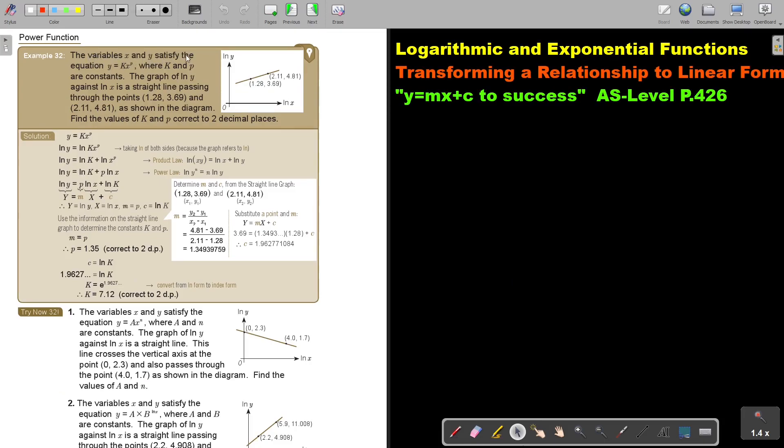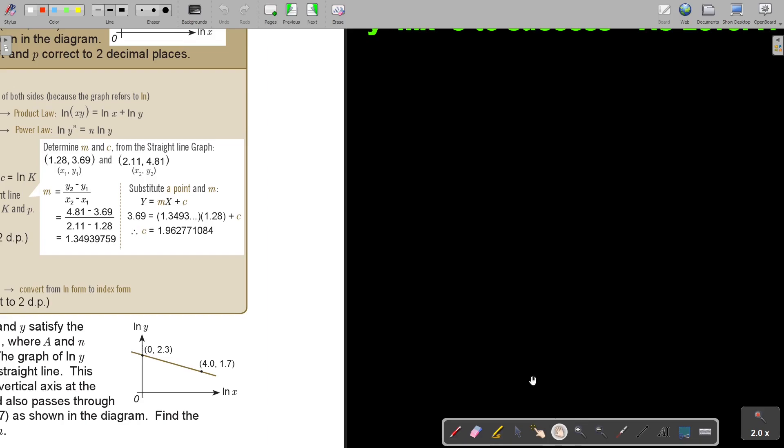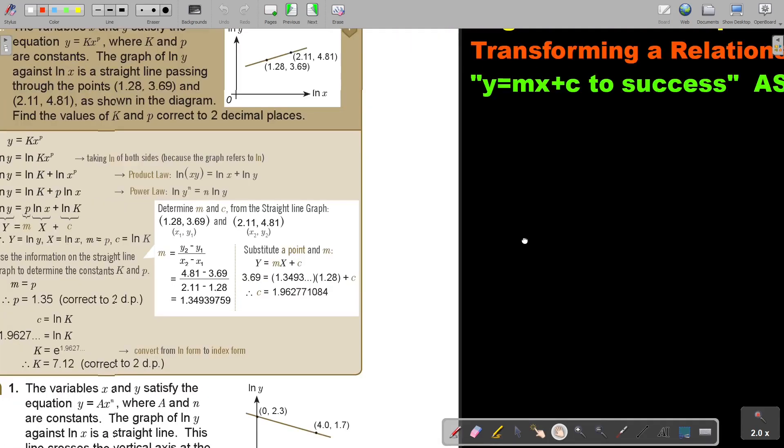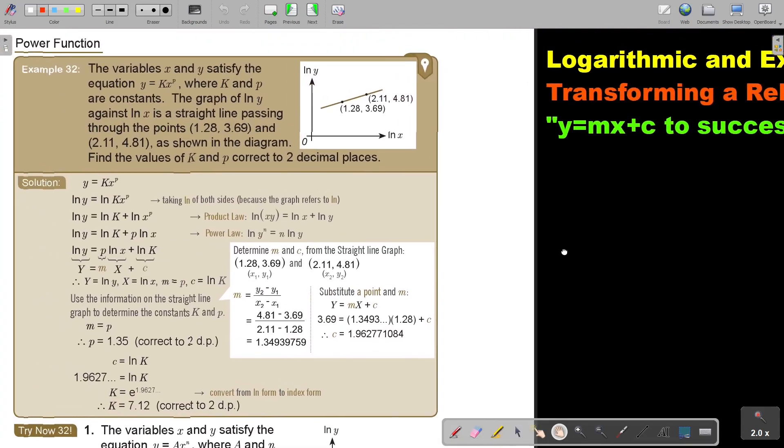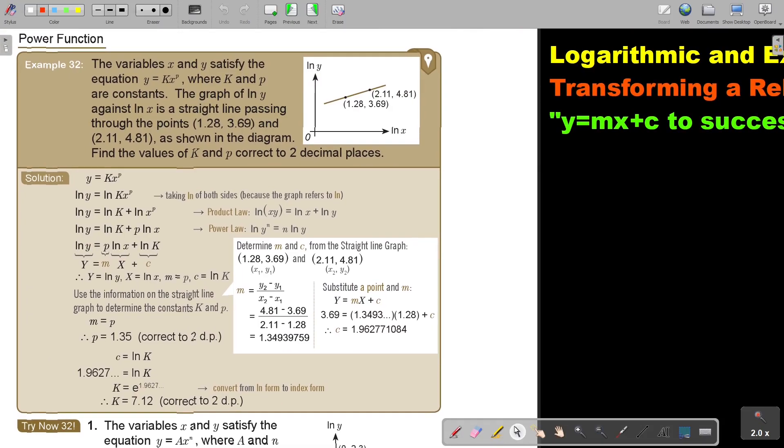The variables x and y satisfy the equation y equals kx to the power of p, where k and p are constants. The graph of ln y against ln x is a straight line passing through the points, the two points, as shown in the diagram. Find the values of k and p correct to two decimal places.